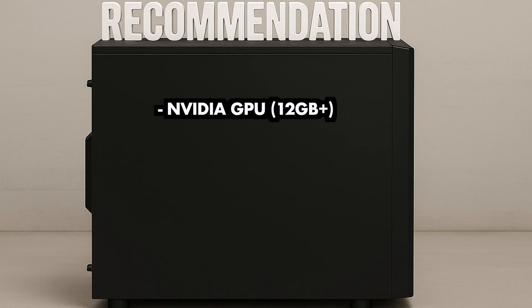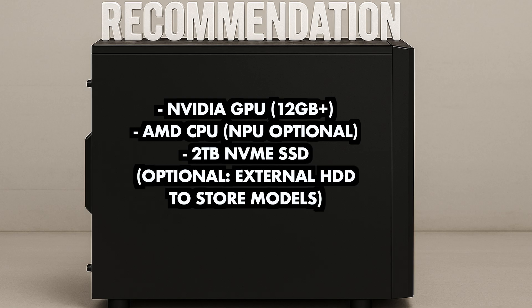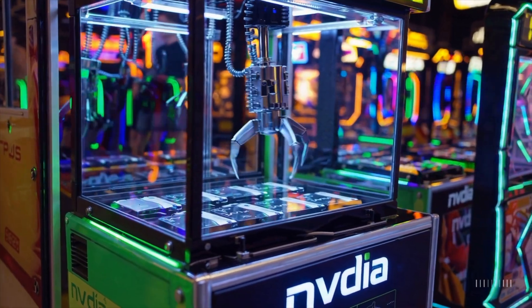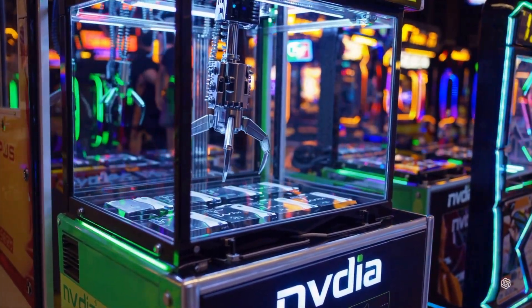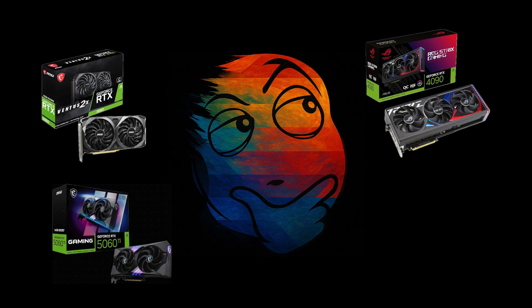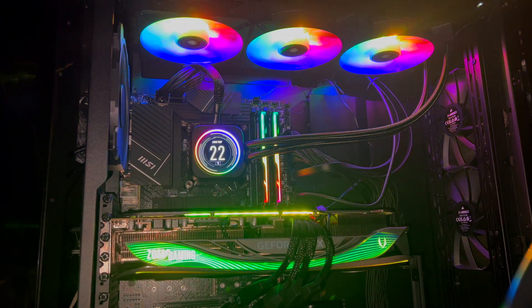As a summary: I recommend getting an Nvidia GPU with at least 12 GB of VRAM, but if your budget allows, aim for at least 16 GB. The CPU isn't too important, and since NPUs are at a very early stage, get any recent AMD CPU that suits your budget. With a 2 TB SSD you'll have enough room to try many different models, and with at least 64 GB of system RAM you can run highly advanced models that won't fit in your GPU — even if it will be slower.